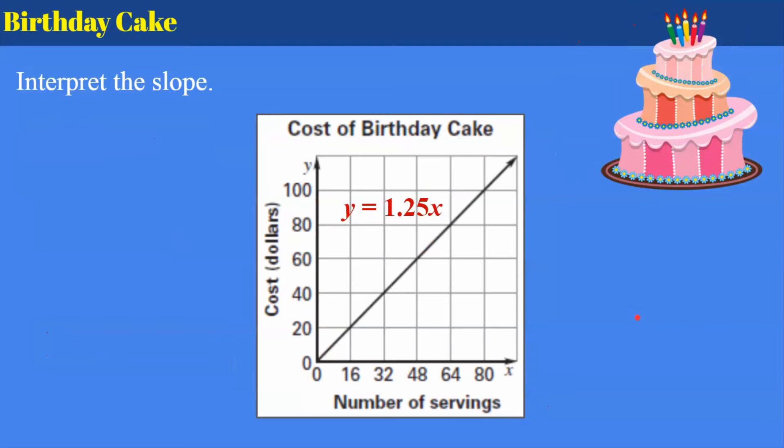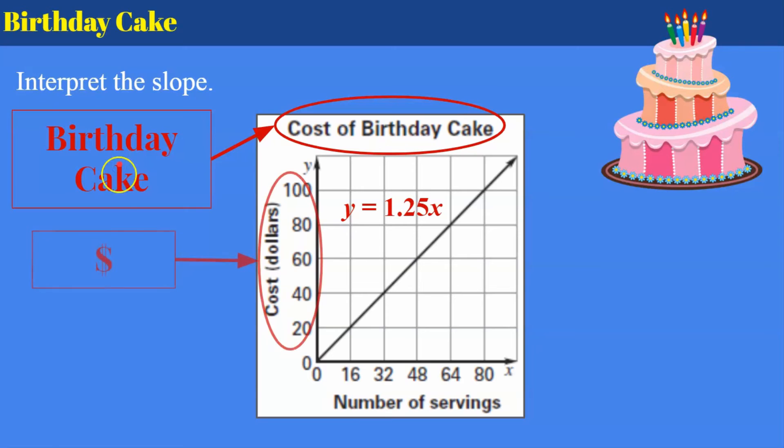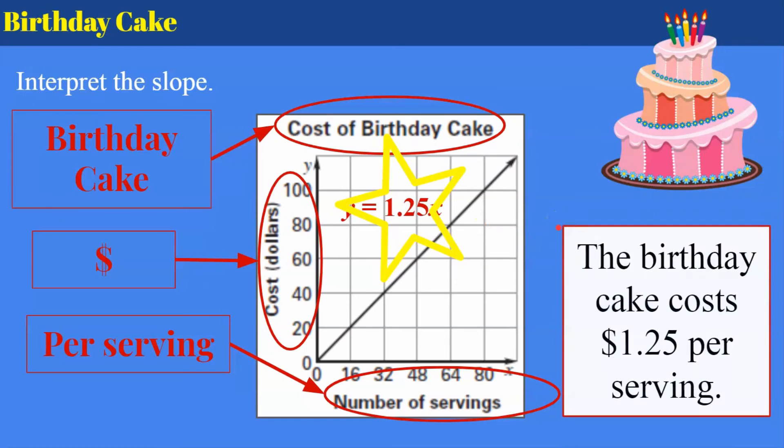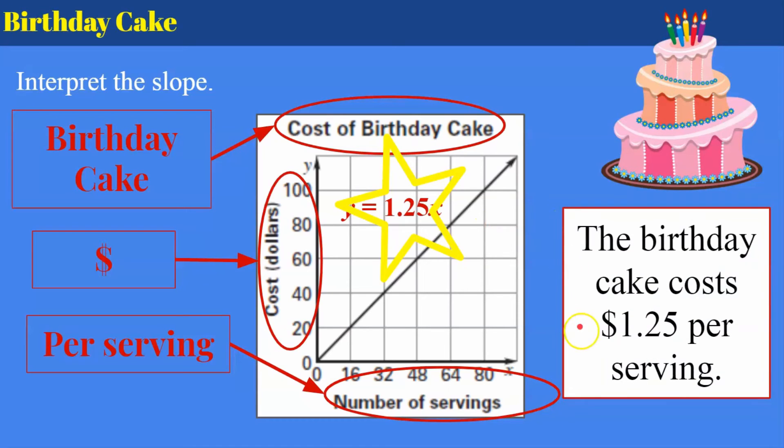All right, now let's talk about birthday cake. Go ahead and pause, interpret the slope, come back and hit play when you're ready to check your work. Welcome back. Let's see how you did. So we're talking about birthday cake. We're talking about the cost in dollars, and we're talking about per serving. And our slope is 1.25, so $1.25. So let's write our sentence. The birthday cake cost $1.25 per serving.